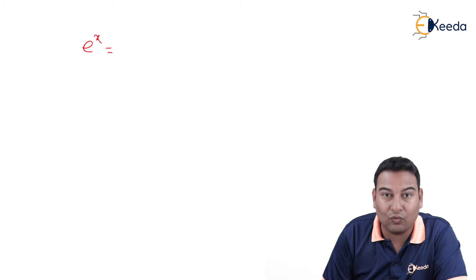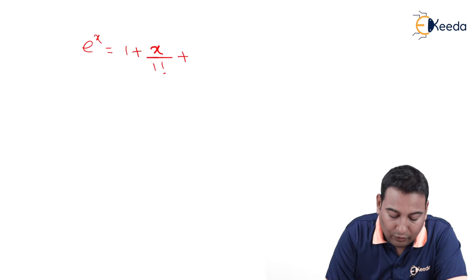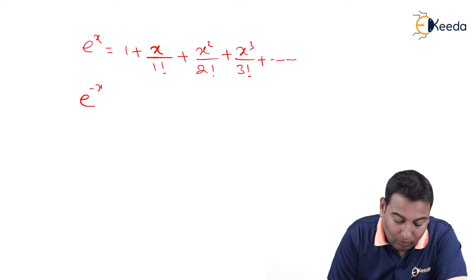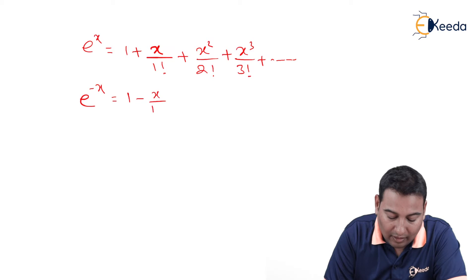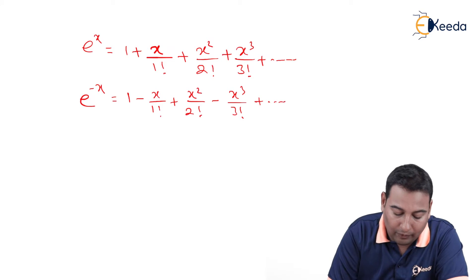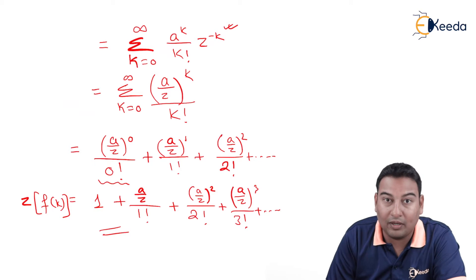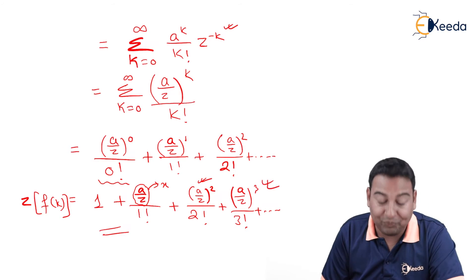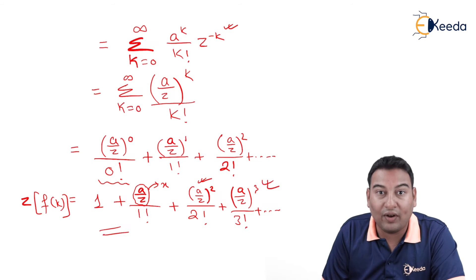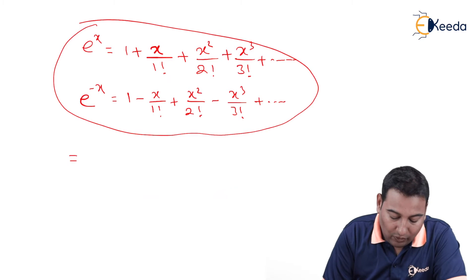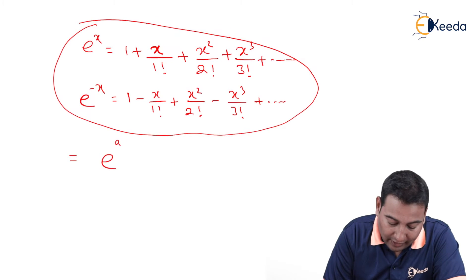Let me tell you — remember the formula for e^x: 1 + x/1! + x^2/2! + x^3/3! + dot dot dot. And e^(-x) is 1 - x/1! + x^2/2! - x^3/3! + dot dot dot. If you compare this with our given problem, treating x as a/z, then our series is exactly 1 + x + x^2/2! + x^3/3!, which equals e^x where x = a/z. So the Z-transform equals e^(a/z).